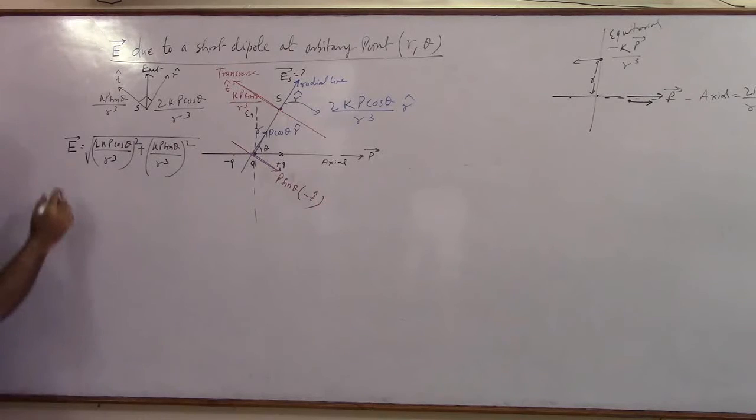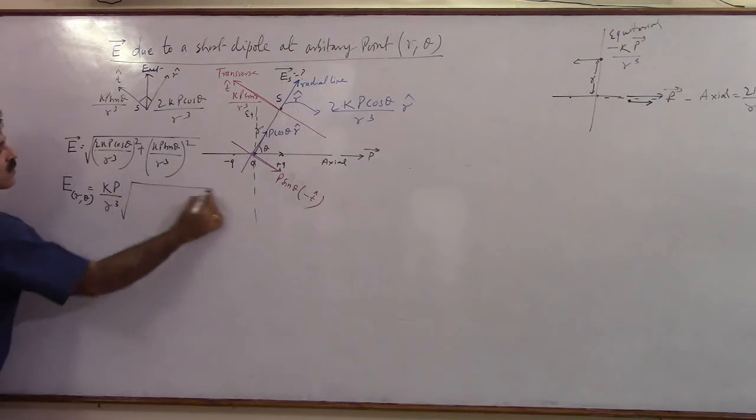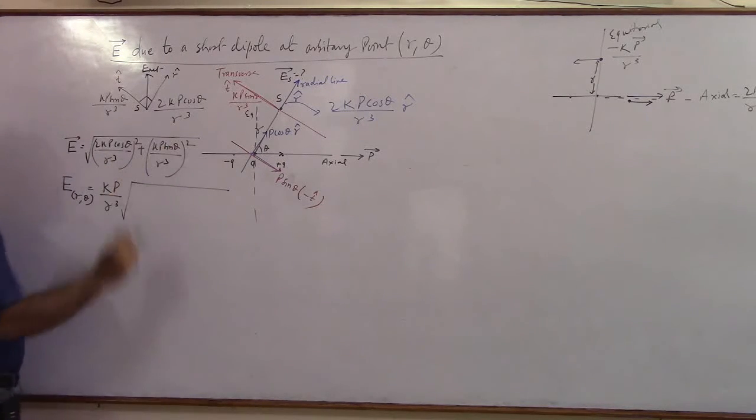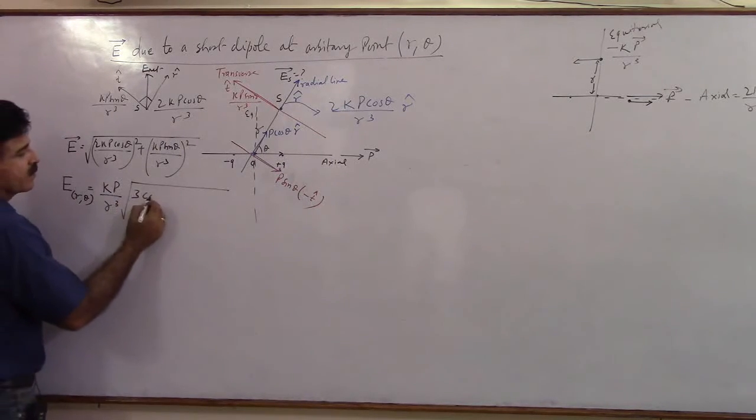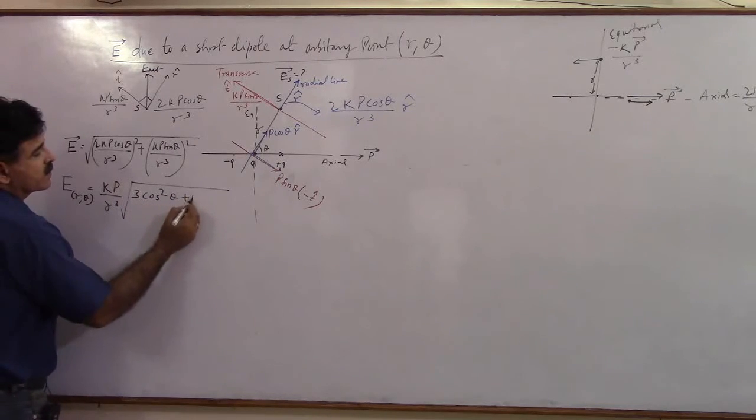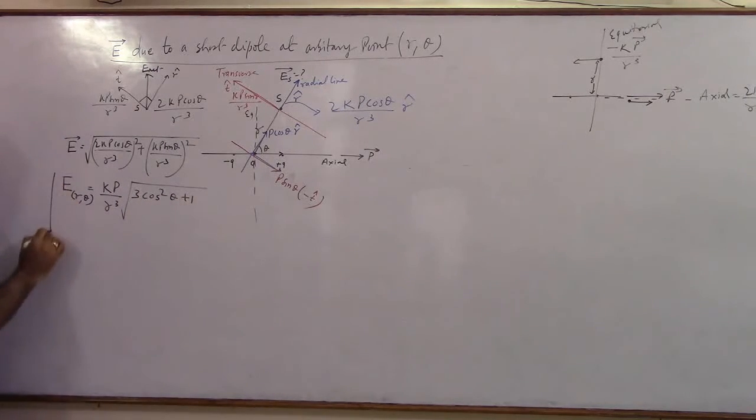Now what will be the magnitude at some point with distance R angle theta? You will say that magnitude part will be equal to K P by R cube can be taken outside the root. Here 4 cos square theta will remain, or here sin square theta will remain, and cos square theta plus sin square theta is 1.